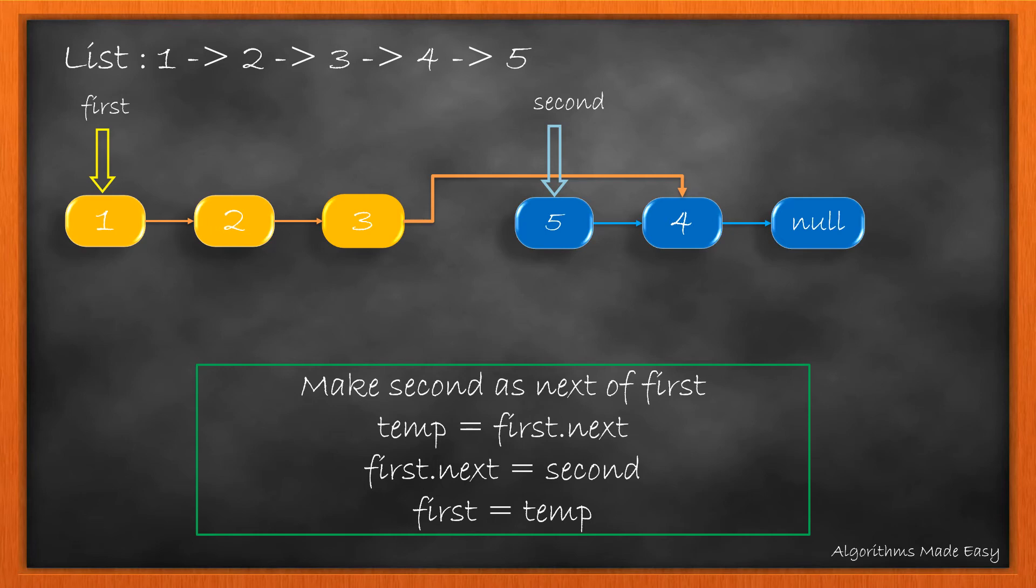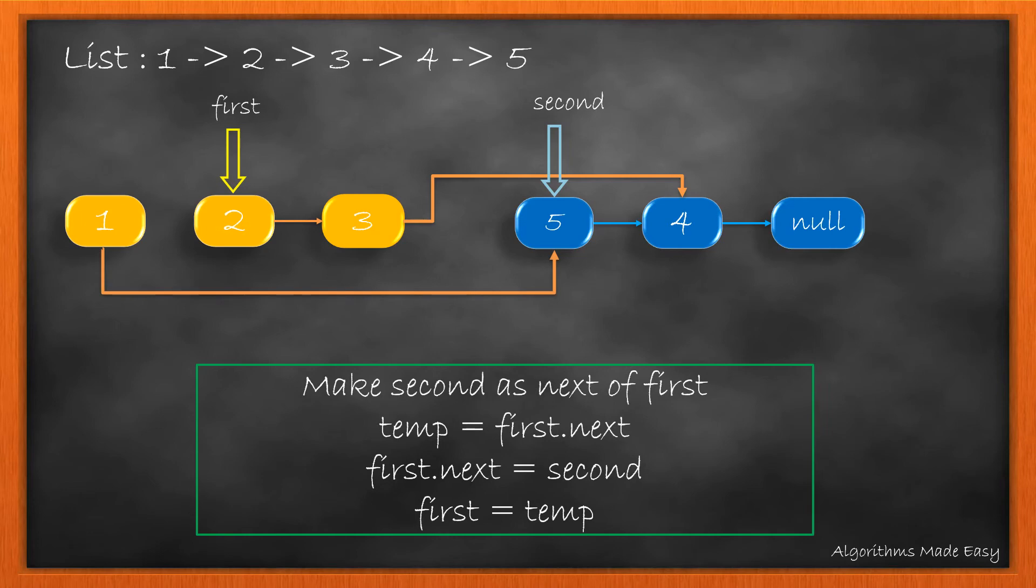So we perform these steps. We store first.next in temp and update its next to second. After connecting with second, we shift the first to the node stored in temp. This is how it looks.